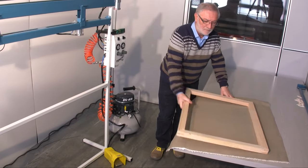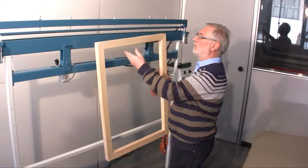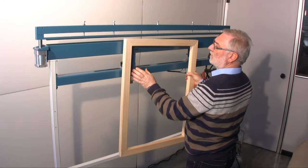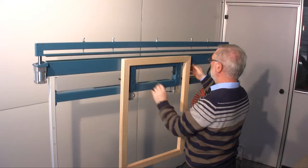To begin with, the stretcher frame is placed on the two mobile shelves. The shelves can be moved manually to adapt to the size of the frame.